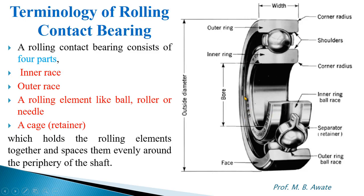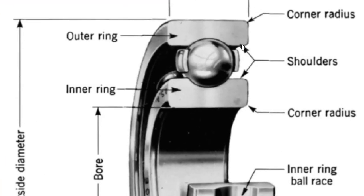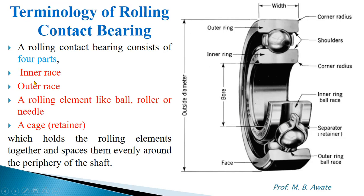Apart from those four major parts, there are other terms: the width of the bearing, as you can see here; the bore of the bearing, which means the inner diameter of the bearing — the inner diameter of the bearing equals the outer diameter of the shaft; the outer diameter of the bearing; the face of the bearing; the corner radius; and the shoulders of the bearing. The four major parts of concern are inner race, outer race, rolling elements — which could be ball, roller, or needle — and cage or retainer.